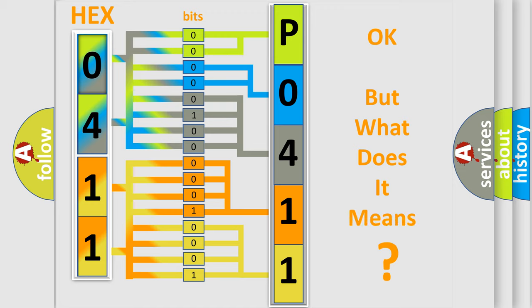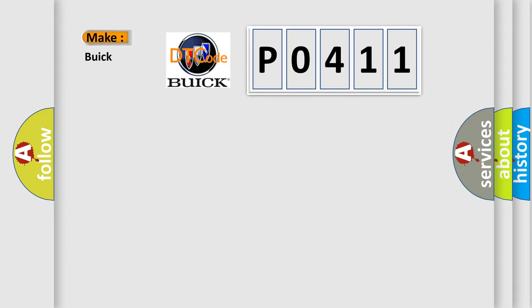We now know in what way the diagnostic tool translates the received information into a more comprehensible format. The number itself does not make sense to us if we cannot assign information about what it actually expresses. So, what does the diagnostic trouble code P0411 interpret specifically for Buick car manufacturers?